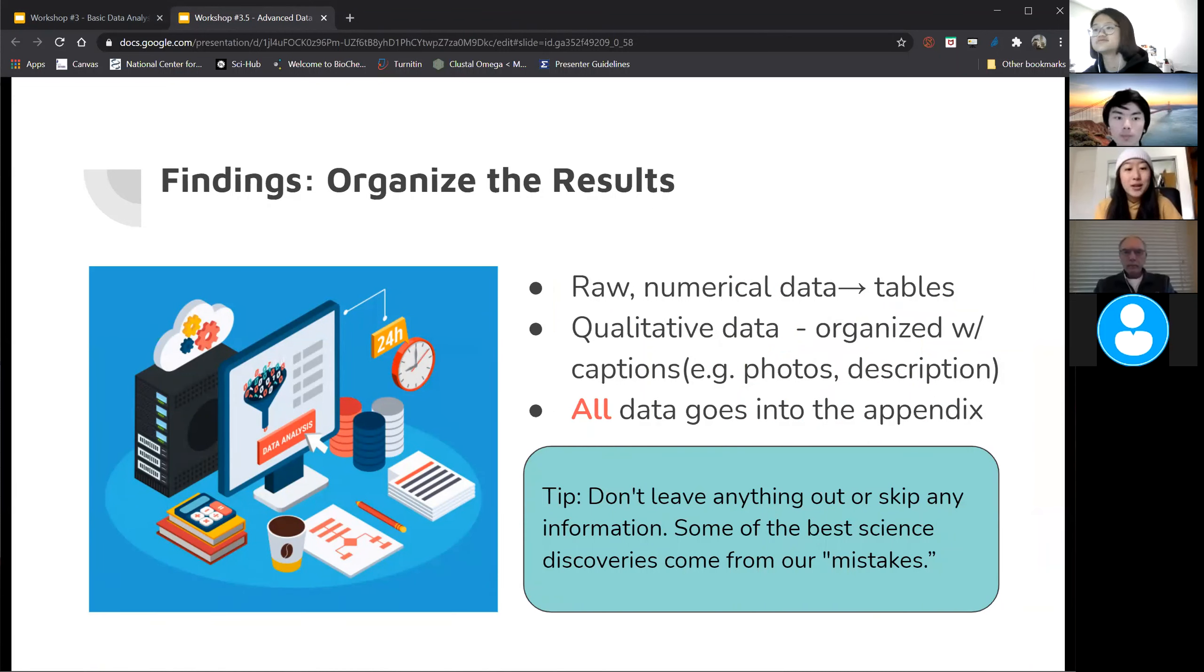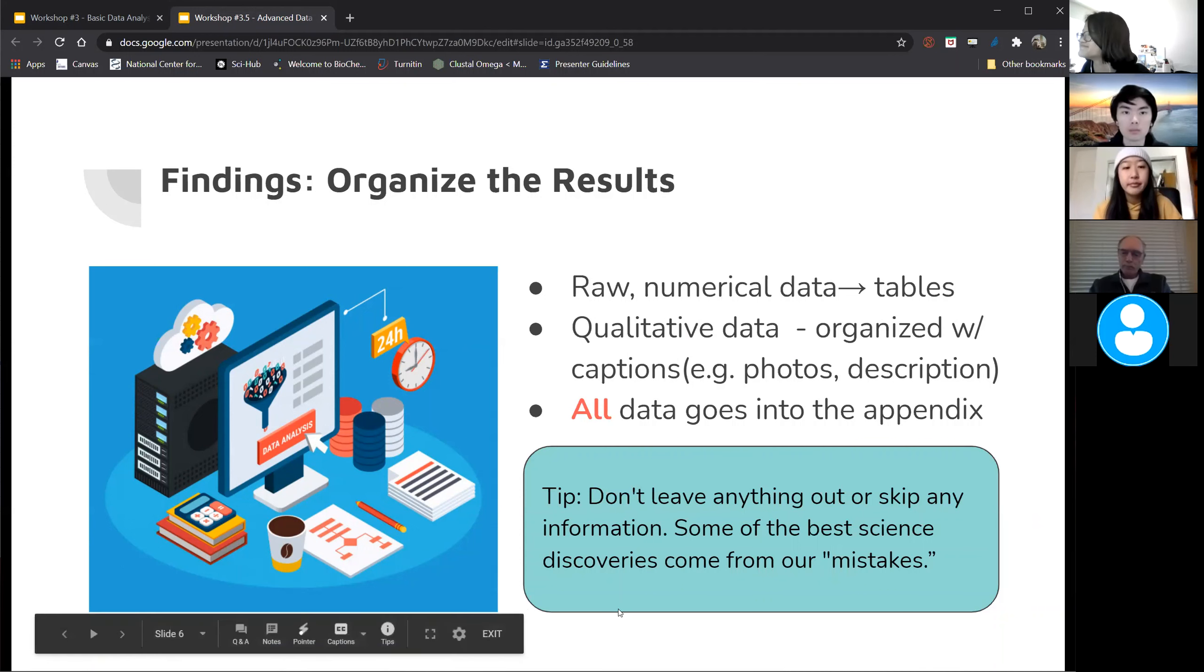So more reminders about organization. You can organize your numeric data into tables like in Excel and Google Sheets so that they're easily graphable. Qualitative data such as photos and observations should also be kept neatly. Make sure you save all of your data, even pre-trials, even if you think it's not going to be useful because you might want it later. And all of your data should go into the appendix of your scientific notebook.